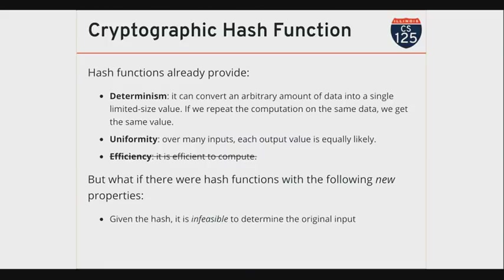The first property for a cryptographic hash function is: if I give you the hash, you should not be able to easily compute the input I used to generate that hash. This is really important, particularly in cryptographic applications. You can start trying all different inputs until you find the right output, but that will take years and years. That's not something we consider a feasible way of doing this — you shouldn't be able to do this quickly.